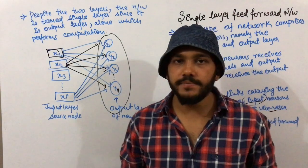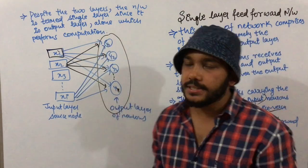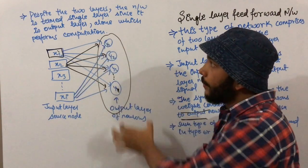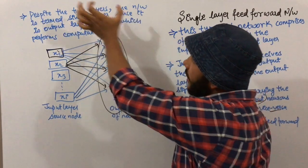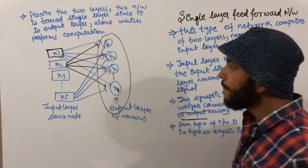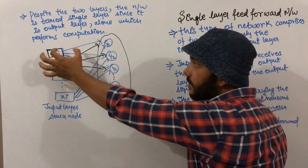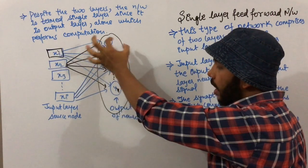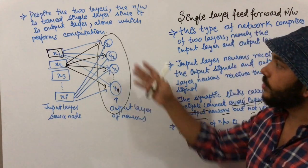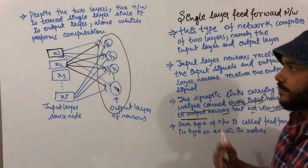One question arises: since this network has two layers — input and output — why is it called a single layer feed forward network? The reason is that only the output layer performs computation. Despite having two layers, the network is termed single layer because it is the output layer alone that performs computation. For example, output neuron y1 receives signals from x1, x2, x3, and so on, and only the output layer processes these.